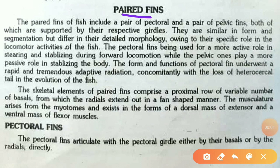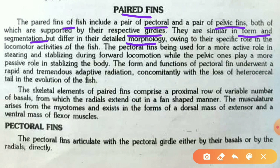Now for paired fins: paired fins are made up of pectoral and pelvic fins. Similar to how humans have pectoral and pelvic girdles near the shoulders and pelvic region respectively, fishes have paired pectoral and pelvic fins. Both are supported by their respective girdles and are similar in form and segmentation but differ in detailed morphology owing to their specific roles in locomotion.